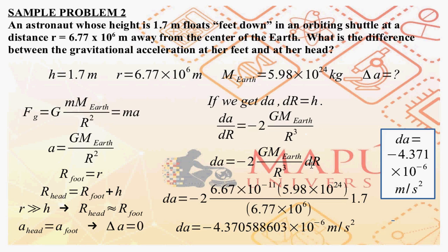Transferring dr to the other side and substituting known values — G, m_earth, and r — we calculate the very small change in acceleration: da equals negative 4.371 times 10 to the negative 6 meters per second squared. So while delta a is approximately zero, the more precise answer is da equals negative 4.371 times 10 to the negative 6 meters per second squared.